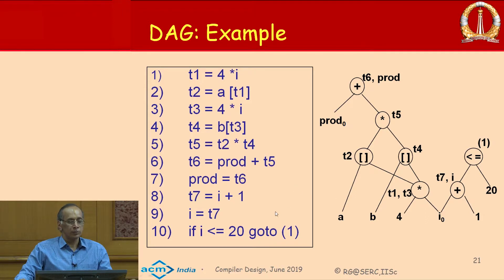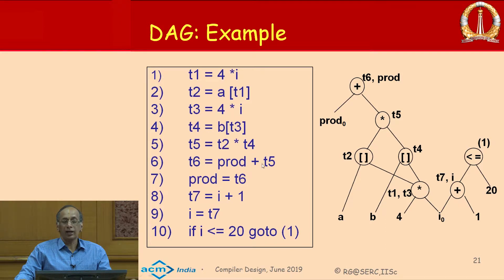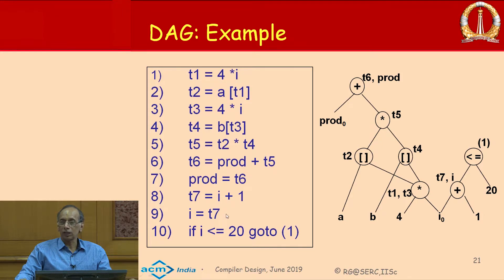Here is a piece of three-address code that computes something — basically accumulating A[i] into B[i] across all elements. Some kind of vector product is what it is computing. Incrementing i and then iterating. If you look at it, this is a basic block because there is no control transfer instruction until the last instruction, and there is no instruction to which control can jump into from outside.